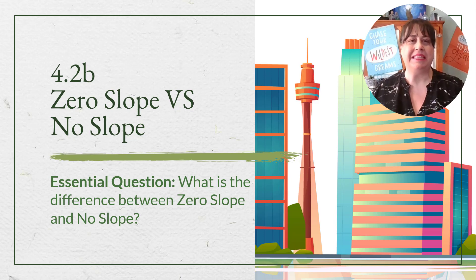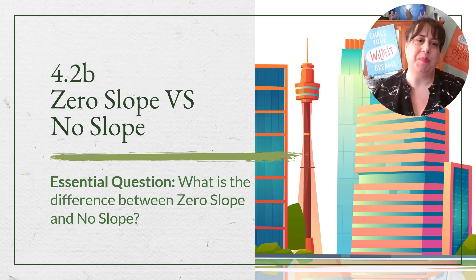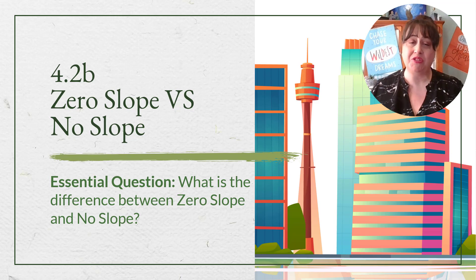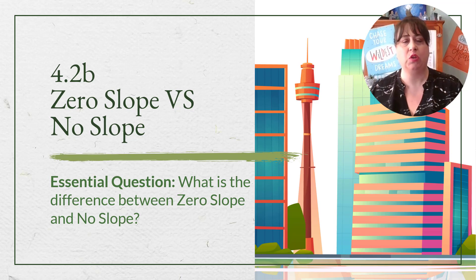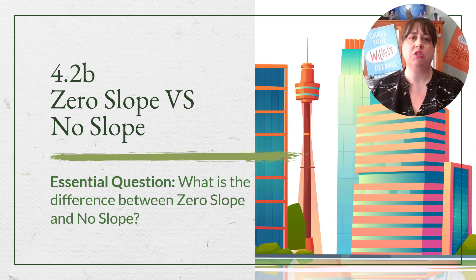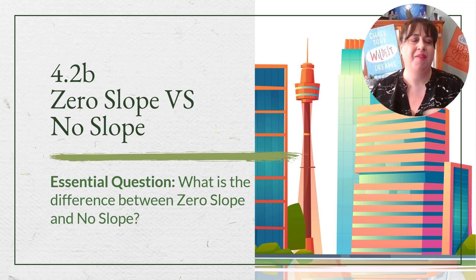Hi, and welcome to Meetings in Math. You are here for 4.2b, zero slope and no slope. These are special situations, special cases of slope that we need to go over.